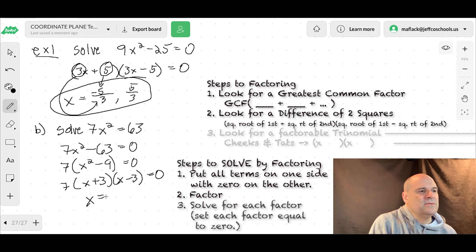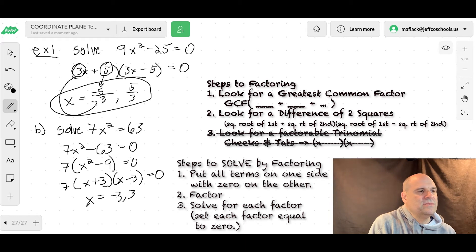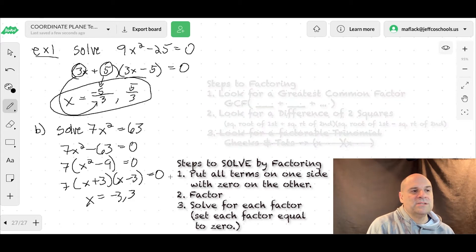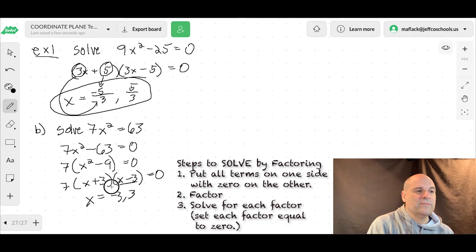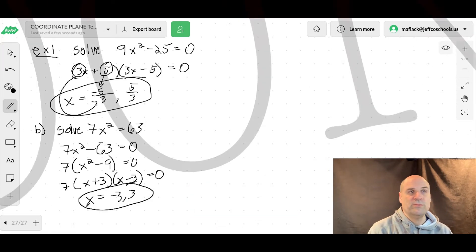So x equals negative 3 and 3. So there's no x that will make this 7, 0. That's a constant. So we can really just ignore it. So the only x's that will make this equation 0 are negative 3 and 3. Okay? Make sure you check it. See if it works. 7 times negative 3 squared is 63. And 7 times positive 3 squared is 63. So boom, it works.